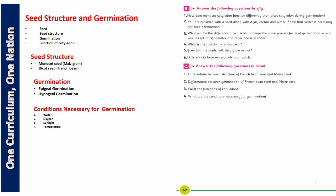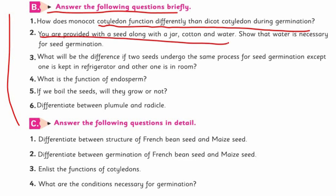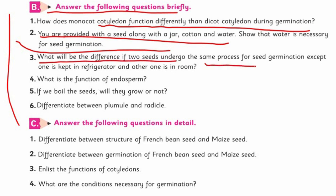First, brief answers. How does the monocot cotyledon function differently than the dicot during germination? In monocot, we took the example of maize, and in dicot we used French bean. This is for you — you are provided with seed, a jar, cotton, and water. Show that water is necessary for seed germination. This is a practical experiment. What will be the difference if two seeds undergo the same germination process except one is kept in the refrigerator and the other at room temperature?